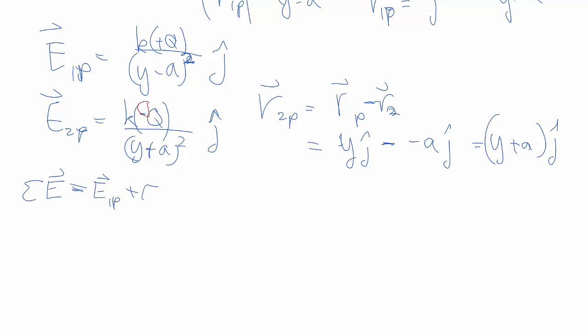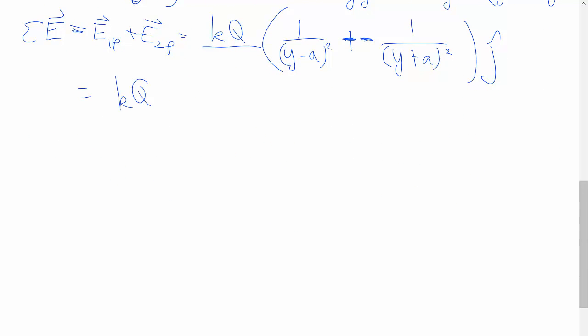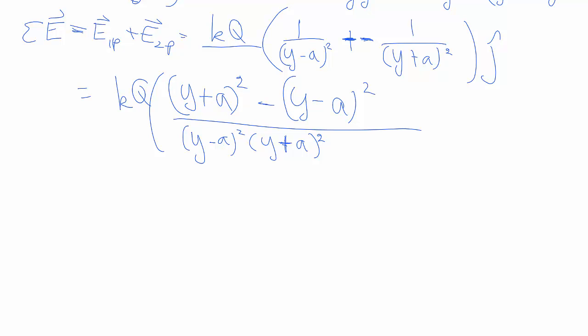Putting these together, we can factor some stuff out. Just to make our lives easier, KQ can come out front, your J hat can come out back. Then we have 1 over Y minus A square plus a negative anyways, Y plus A square. Combining these things, you need a common factor on the bottom. And then you multiply what there's missing to the top. So in this case, you're missing that from the one top and then missing the other one from the other top, J hat.